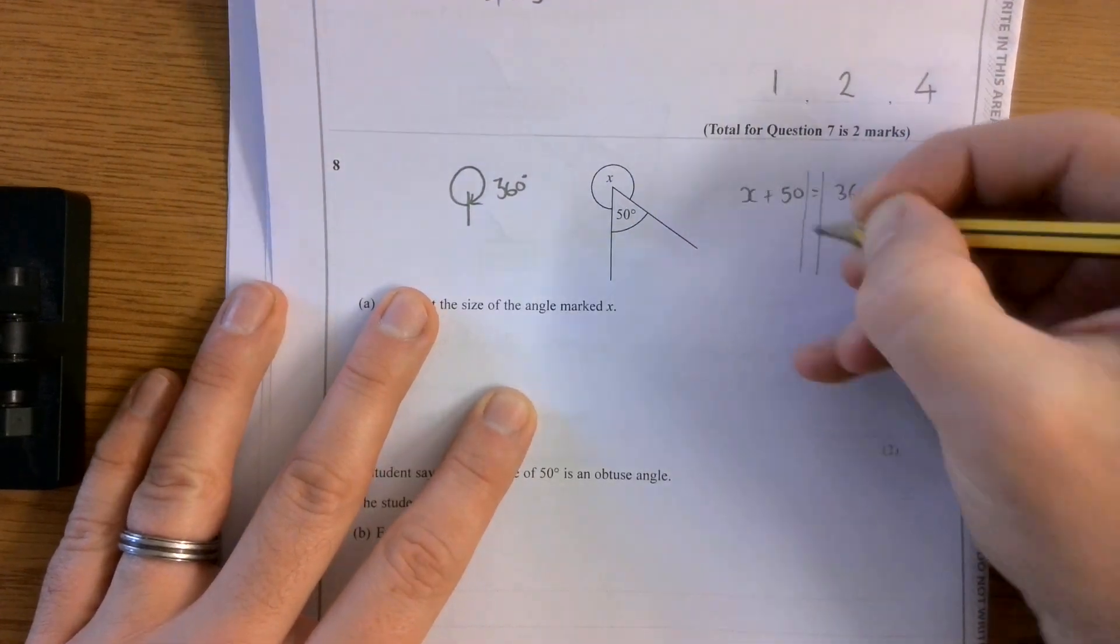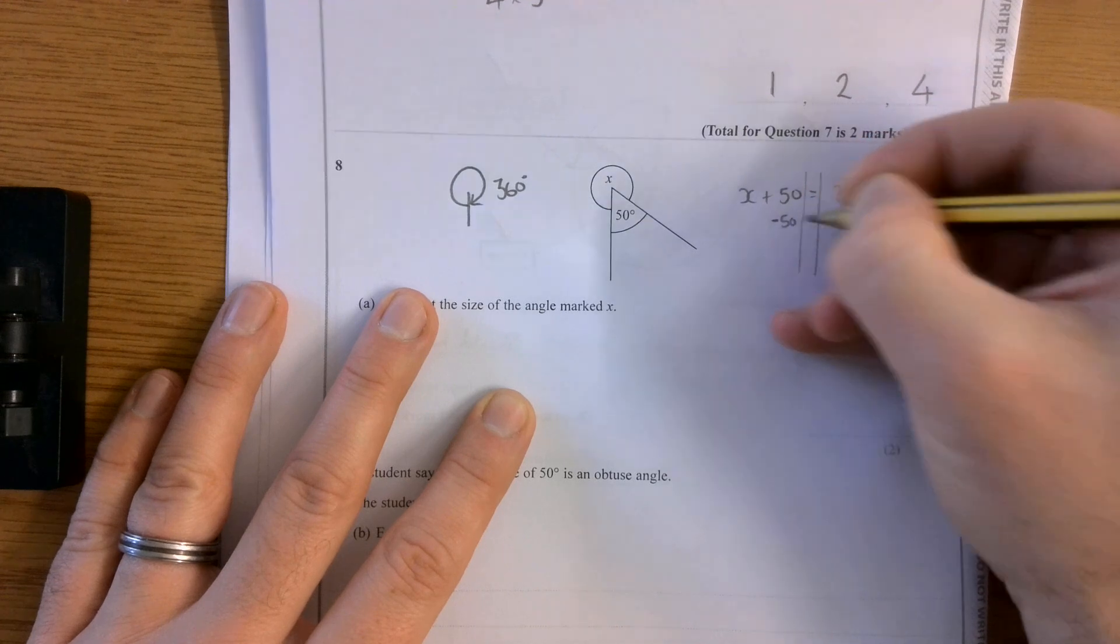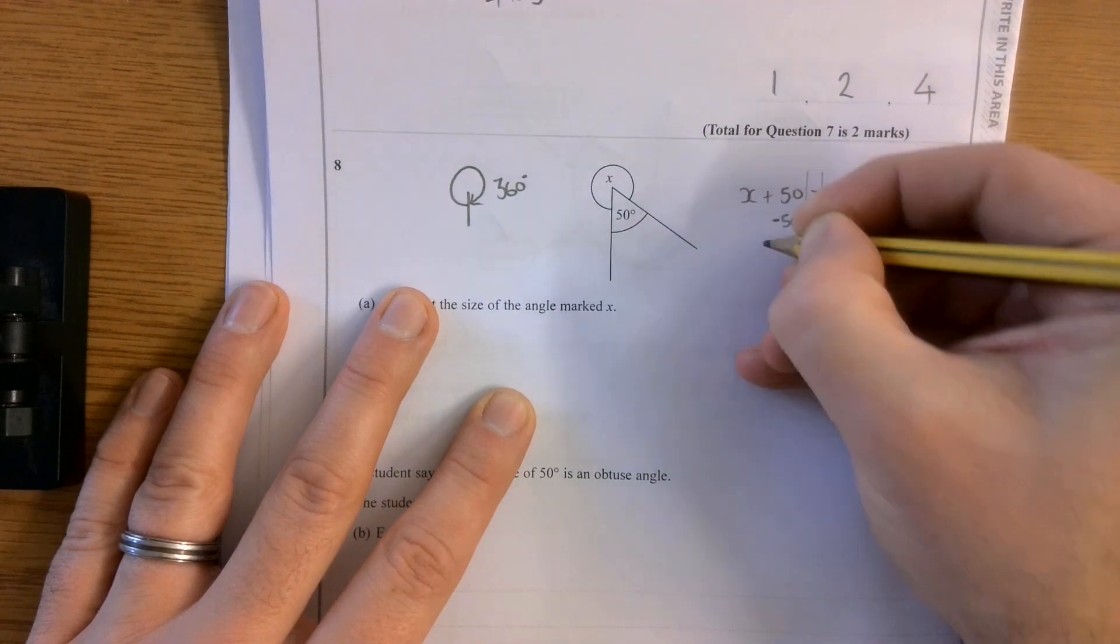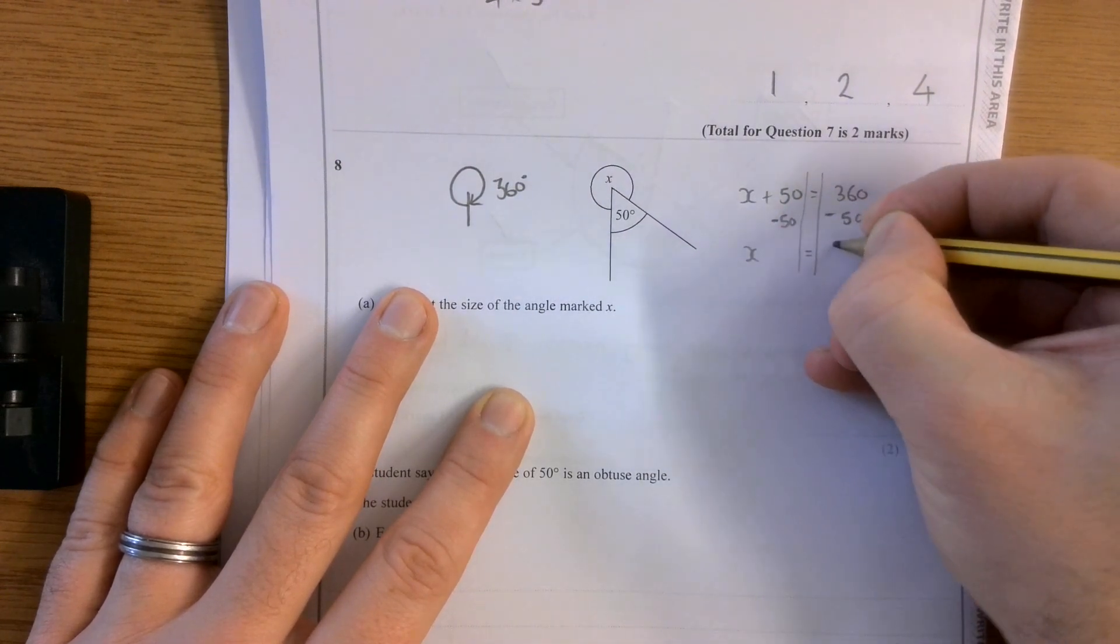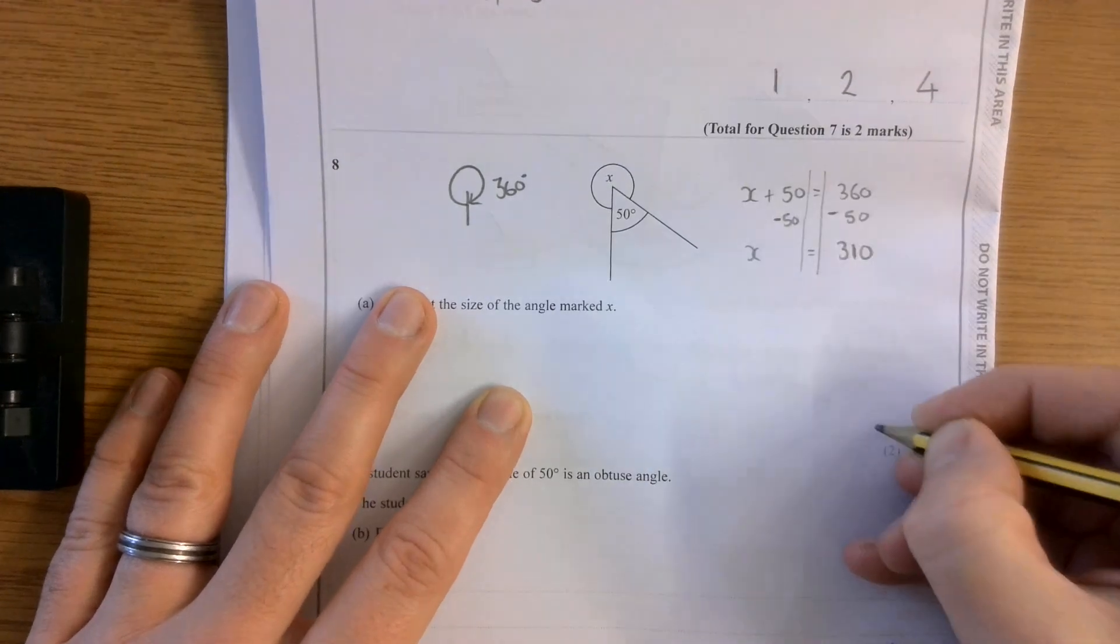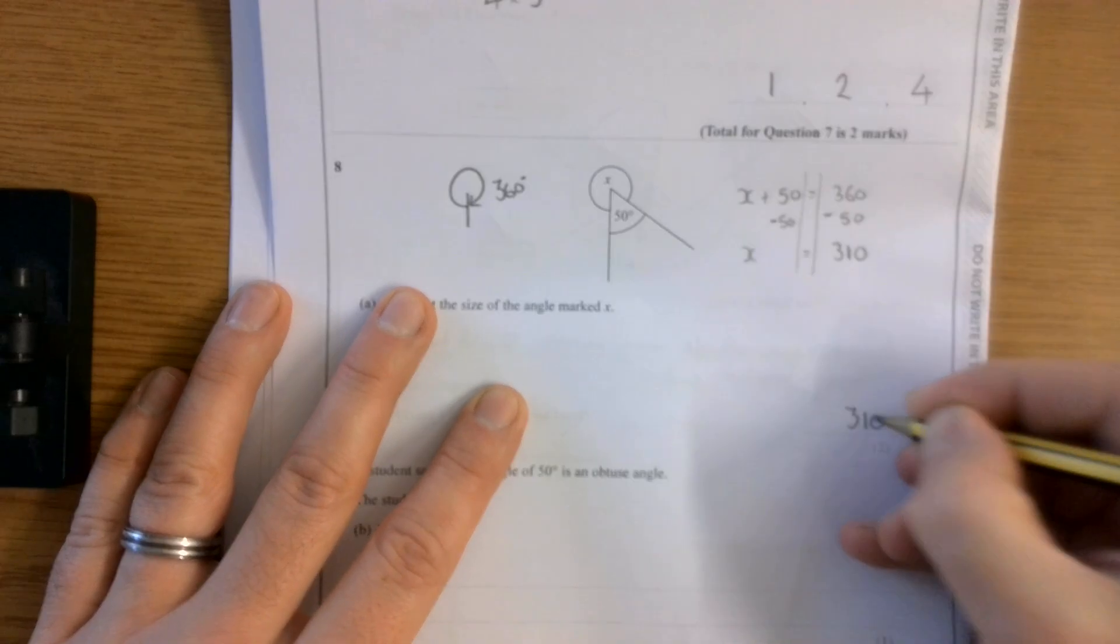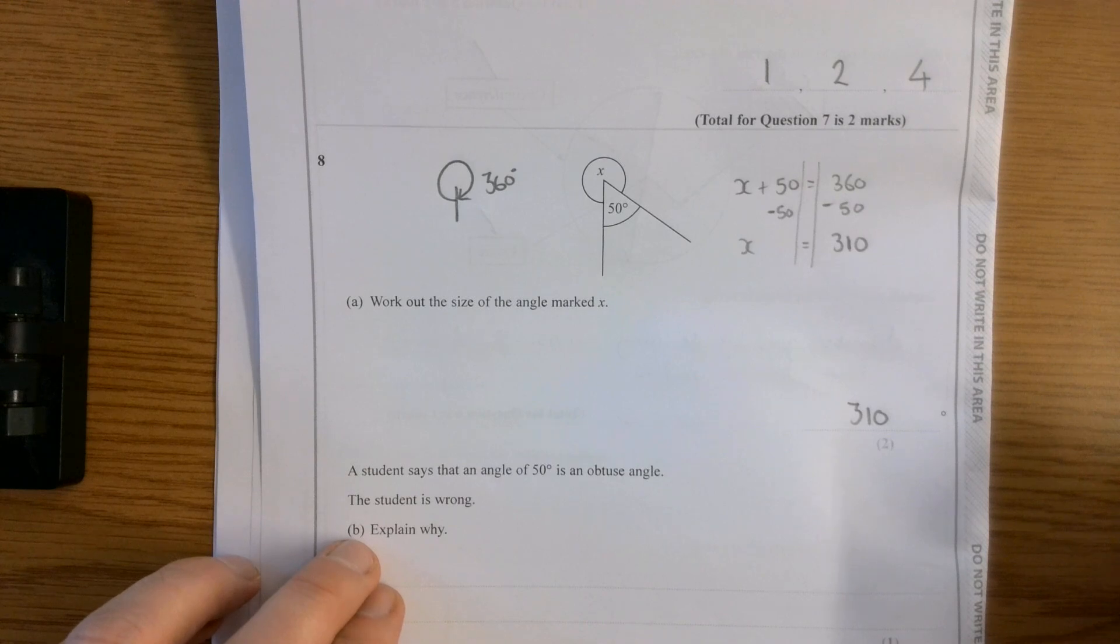So I'm going to think, what do I need to add to 50 to get me to 360 degrees? I need to undo that add 50. So I'm going to take away 50. And that's going to give me 310 degrees. Done.